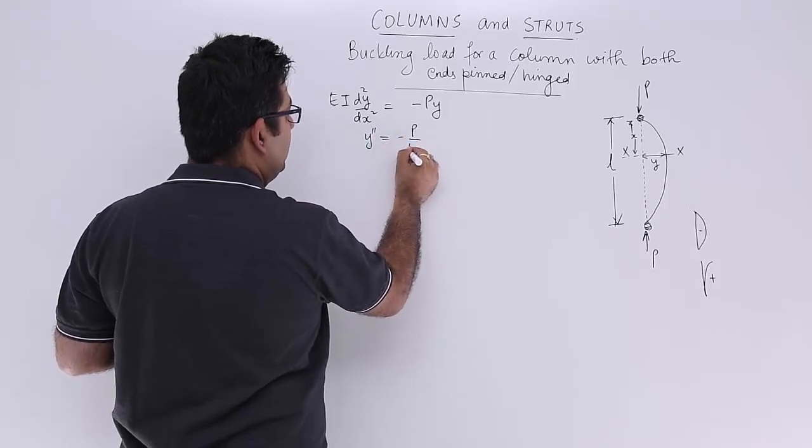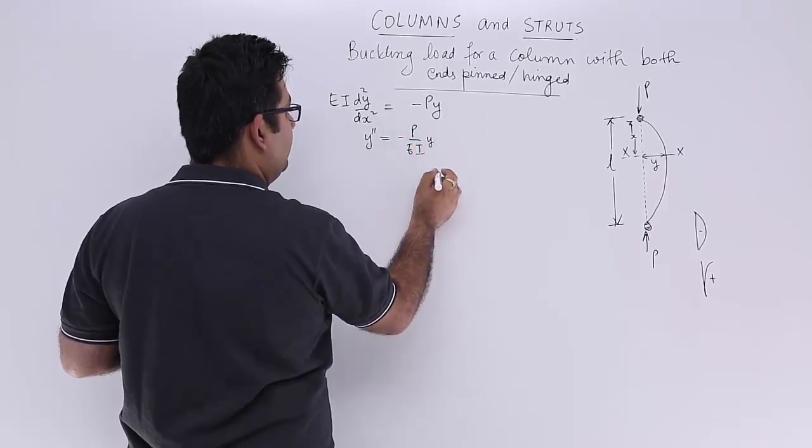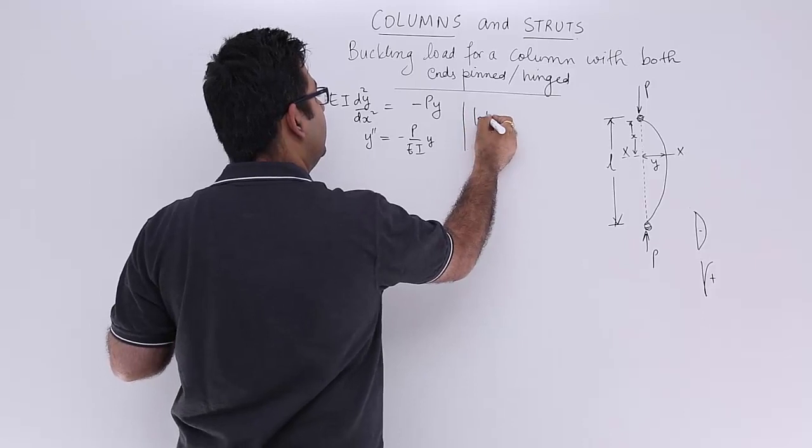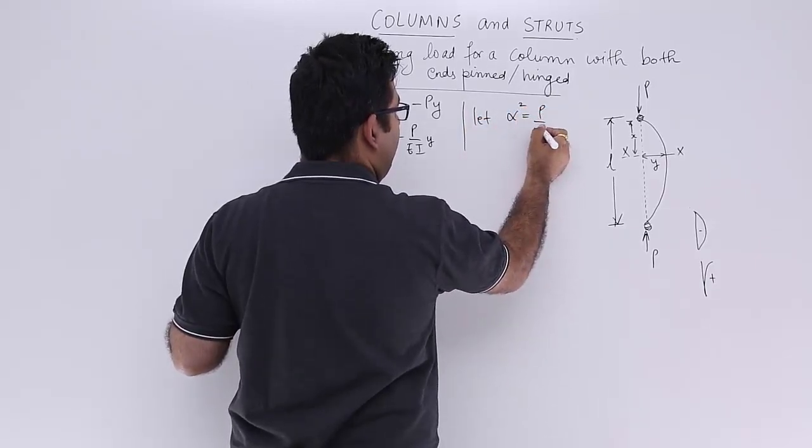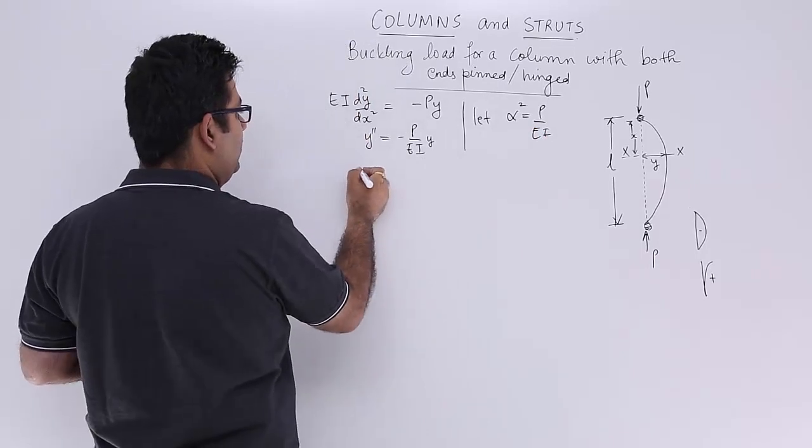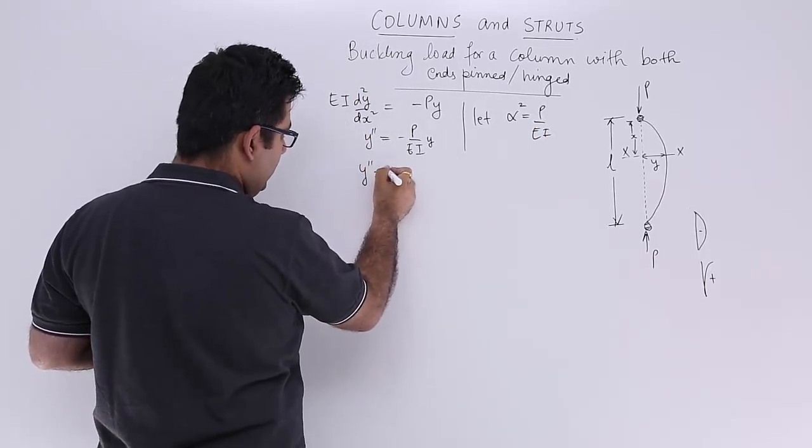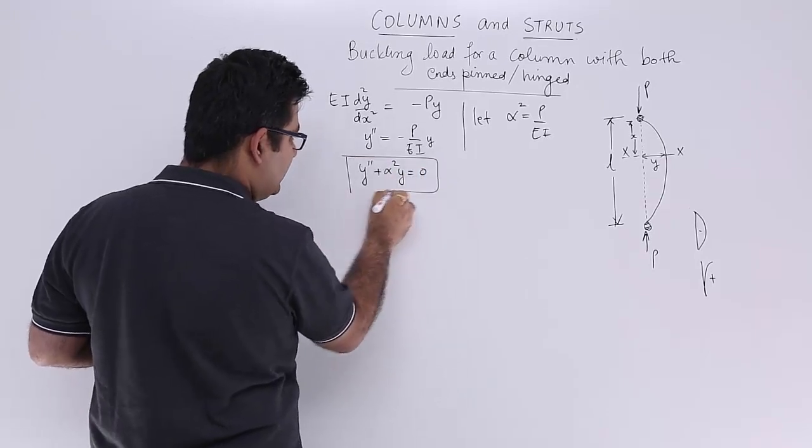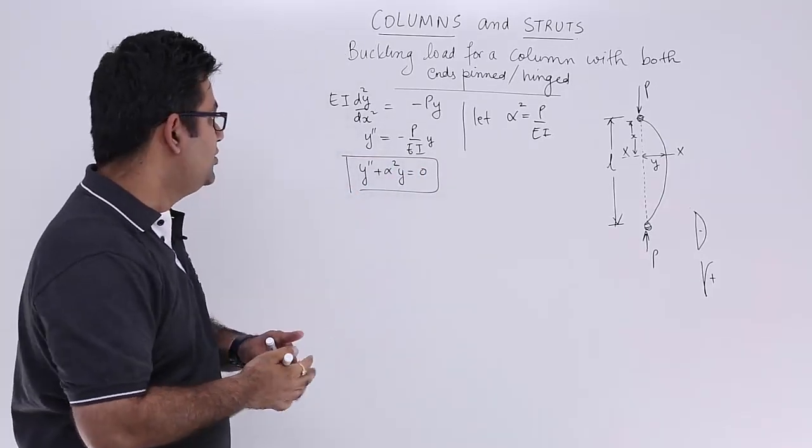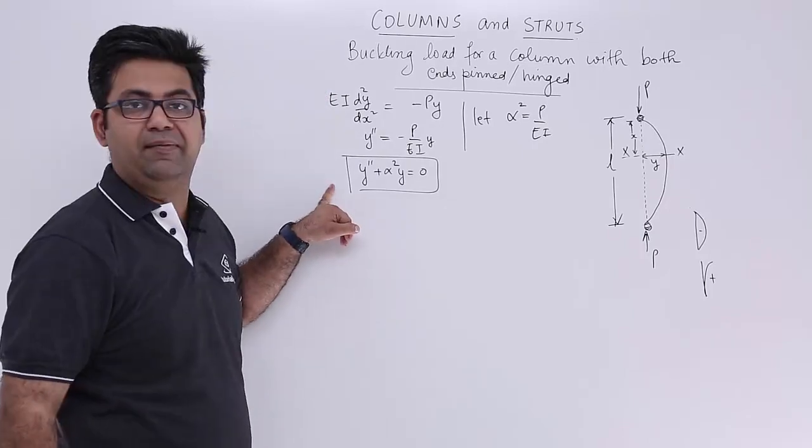So what will I do? I will assume constant alpha square, which is P upon EI, and I will substitute it here. So your differential equation will become y double dash plus alpha square y is equal to 0. So now the question remains only to solve for y.